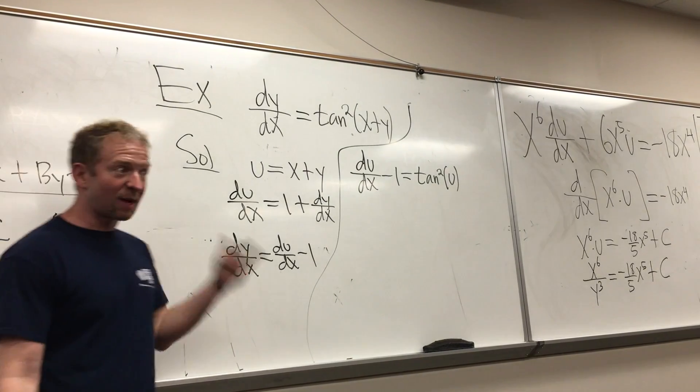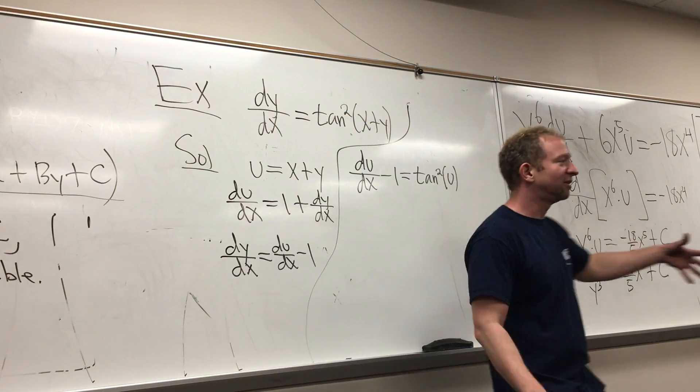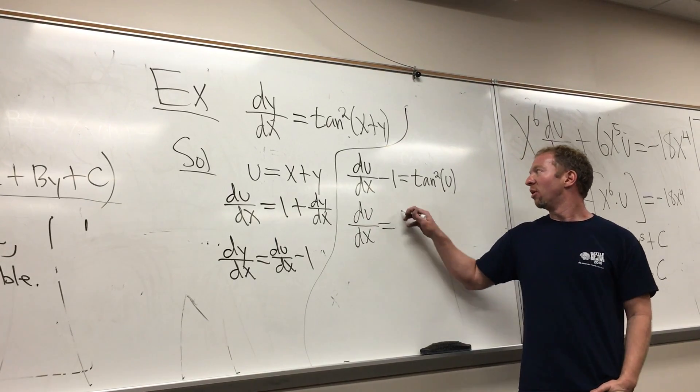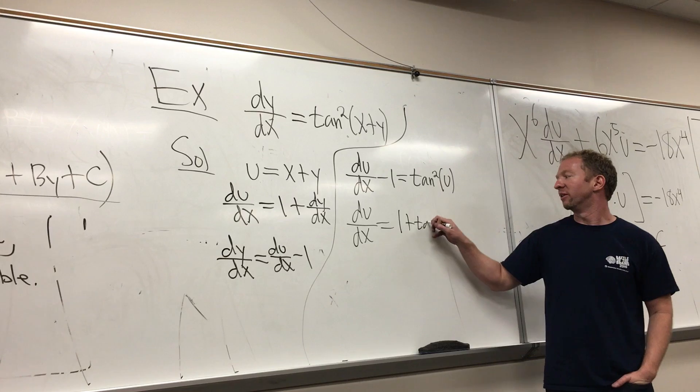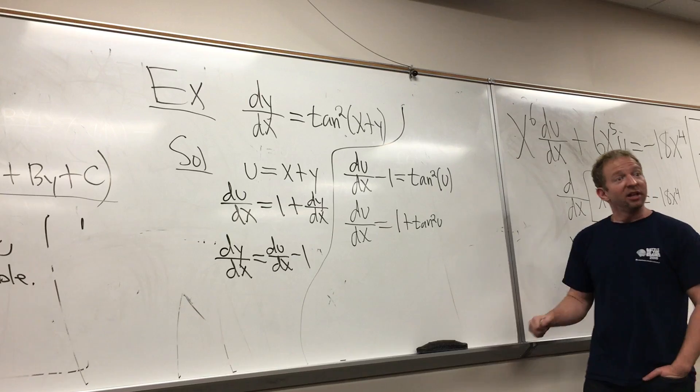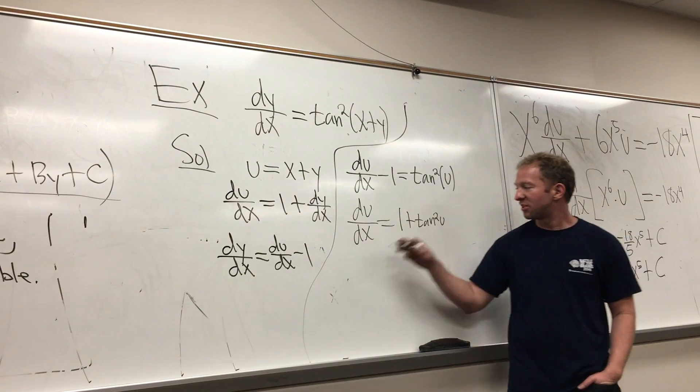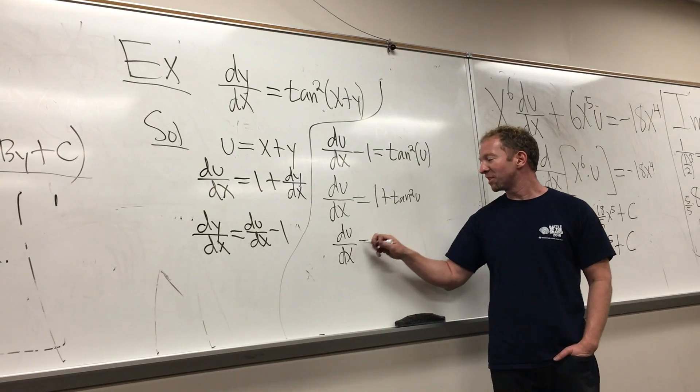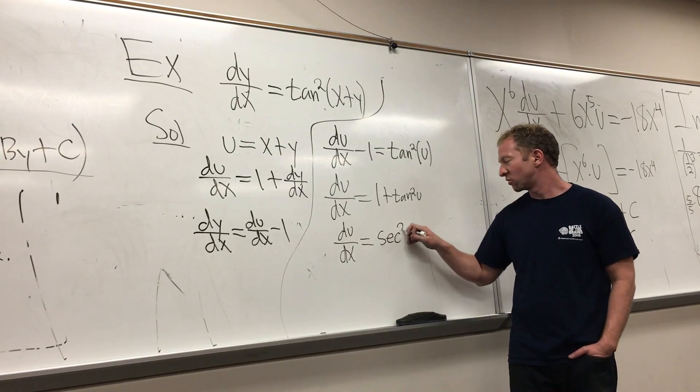So dy/dx is du/dx minus one. And this is equal to tan squared of u. And this is separable. Oh, we can add the one. So du/dx is equal to 1 plus tan squared of u. What's 1 plus tan squared? Yeah. This is the secant function squared. This is du/dx. 1 plus tan squared is secant squared of u.